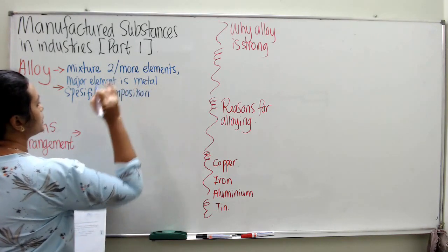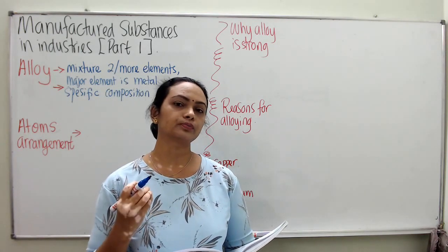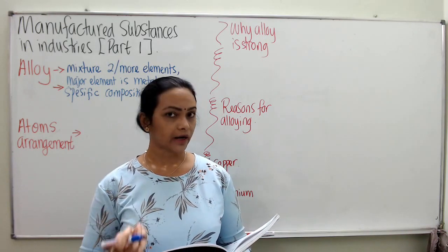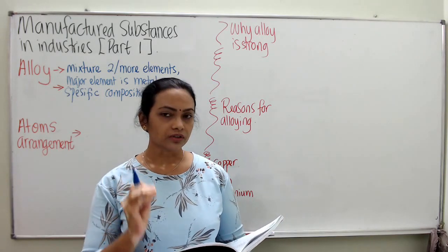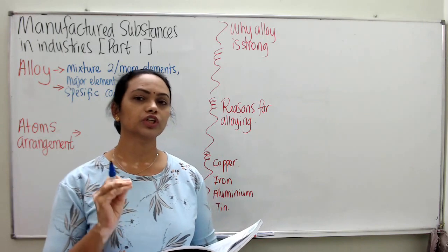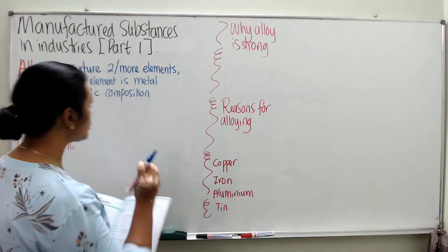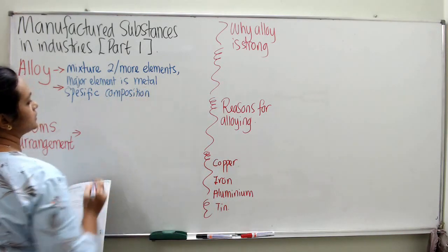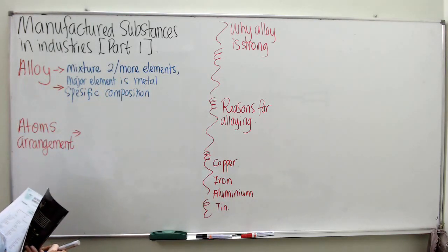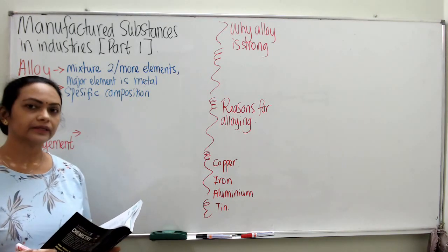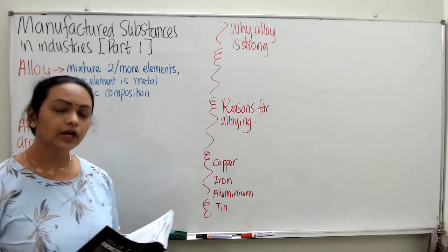Specific composition is important because of the uses and the need to produce alloy. If you add too much non-metal, we might get a softer mixture. So we have to concentrate on the amount of composition of the metal, non-metal, or other types of metals. The major component must be metal. So again, alloy is a mixture of two or more elements where the major element added is metal.